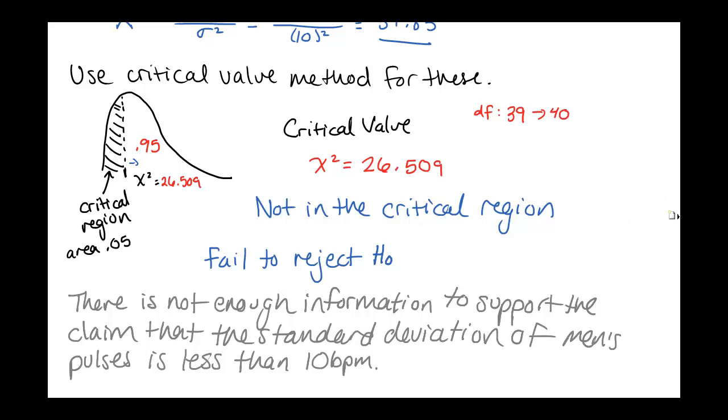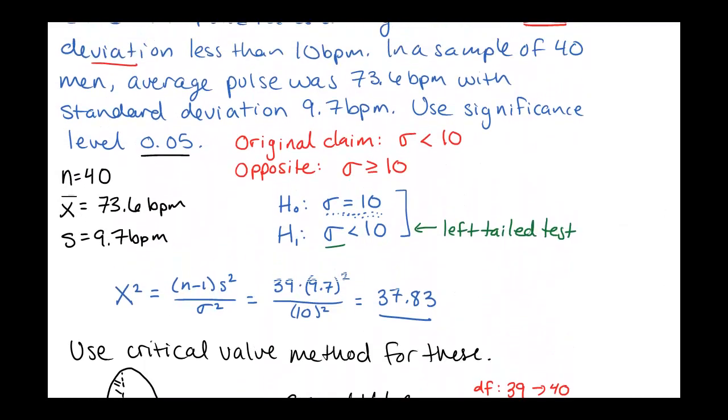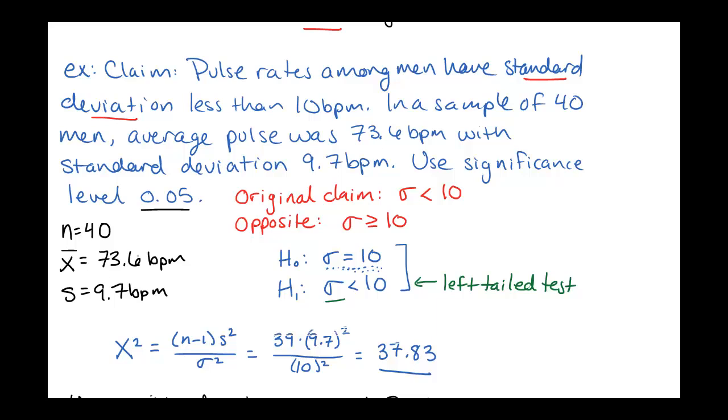If we think about this logically, we did a sample and the average of the sample, or the standard deviation of the sample, actually is less than 10 beats per minute, but not very, very much. So there's a fairly good chance that the average is actually more than 10 beats per minute, and we just happened to see a smaller number here.